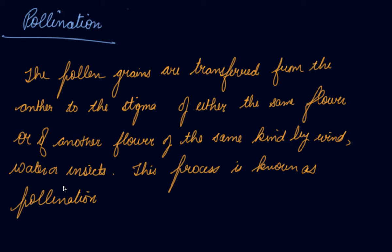In a previous video we studied the structure of the flower. There is an anther which contains pollen grains, and on top of that it has a stigma. When pollen grains are taken and they stick to the stigma of the same flower or another flower of the same kind, either by wind, water, or insects, this process is known as pollination.